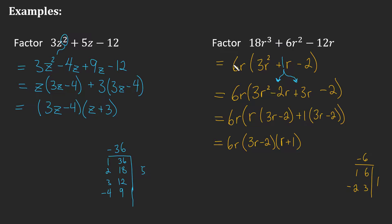Let's break it down again: I factored out the GCF of 6r, leaving a trinomial. I couldn't use product and sum because A is 3, so I multiplied 3 times 2 to figure out the decomposition, then broke the 1 up into negative 2 and positive 3. I factored the left-hand side normally, and for the right-hand side I factored out 1 — because 1 times anything is itself — leaving 3r − 2 as the common factor in both cases. Now you should definitely practice this skill; there are other ways to factor non-monic trinomials, but this is the method I teach.